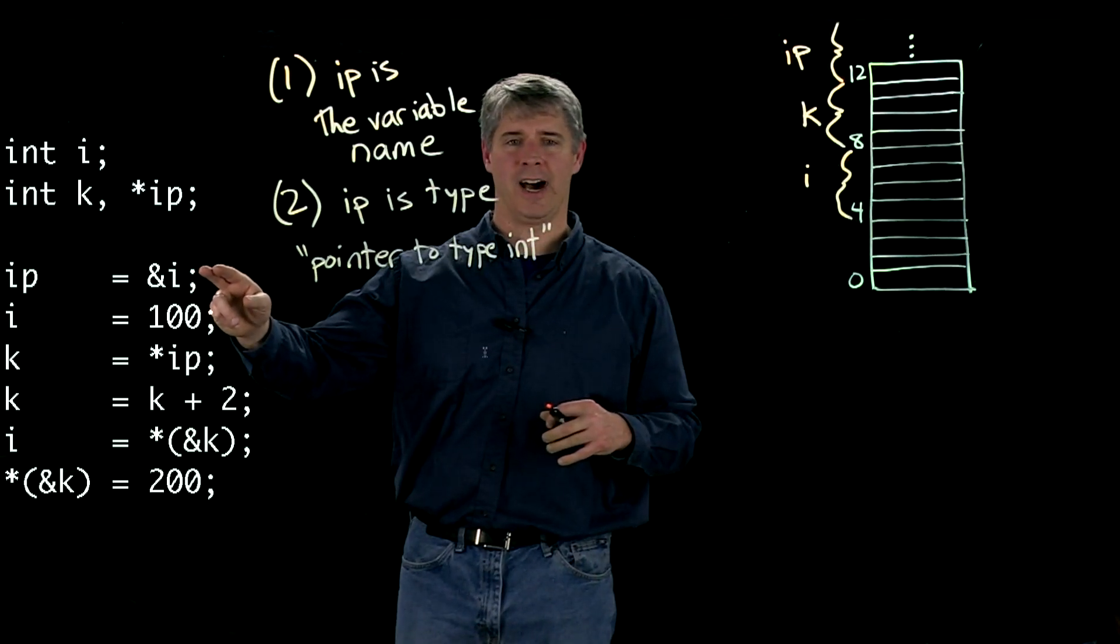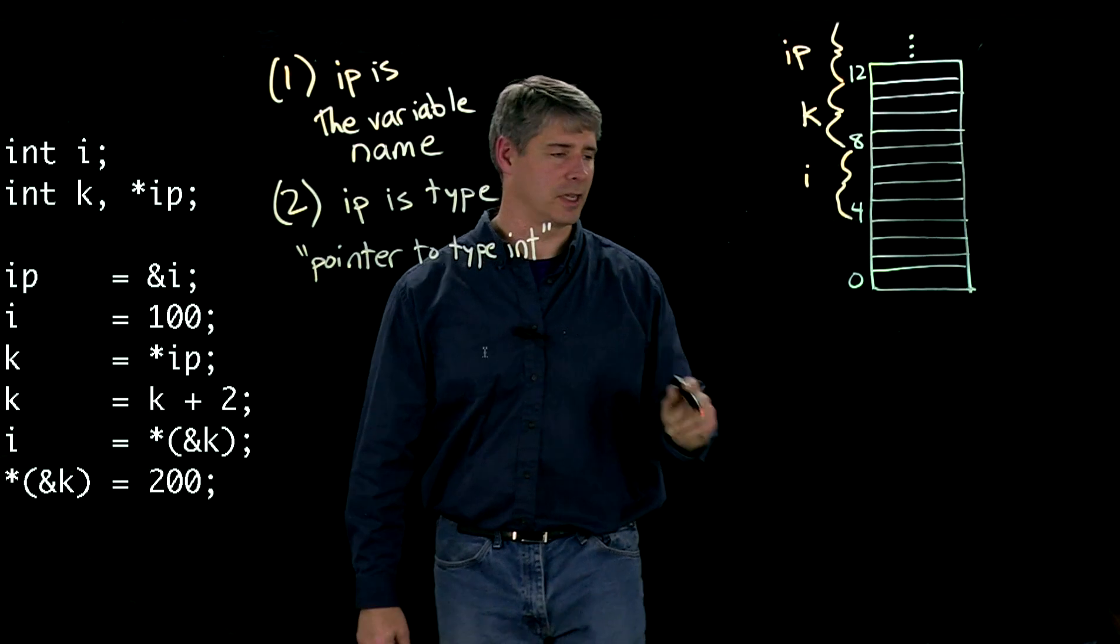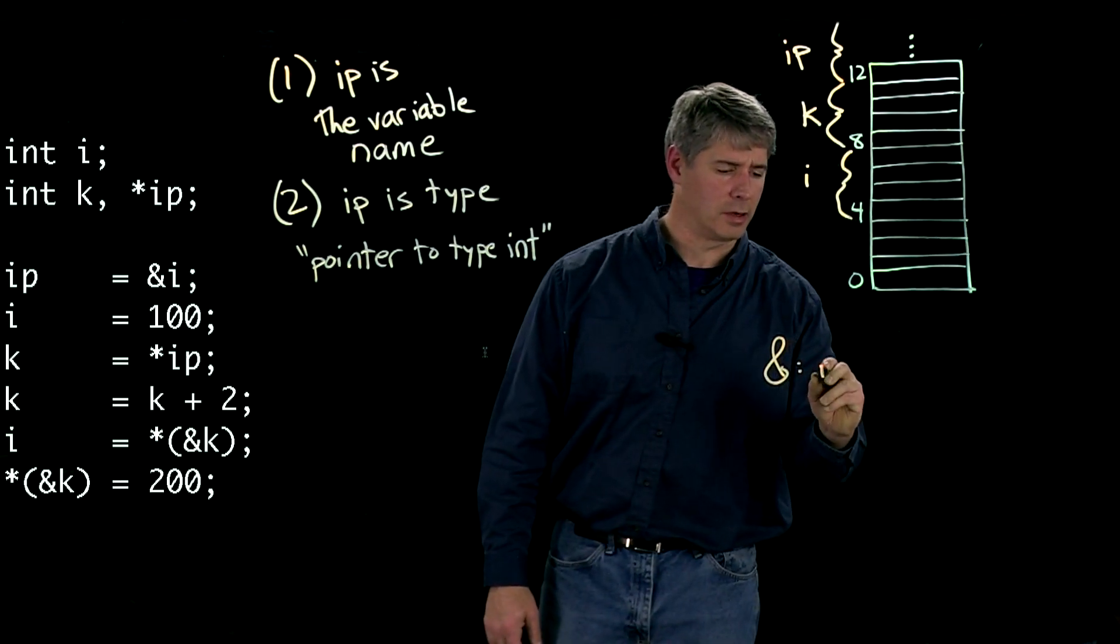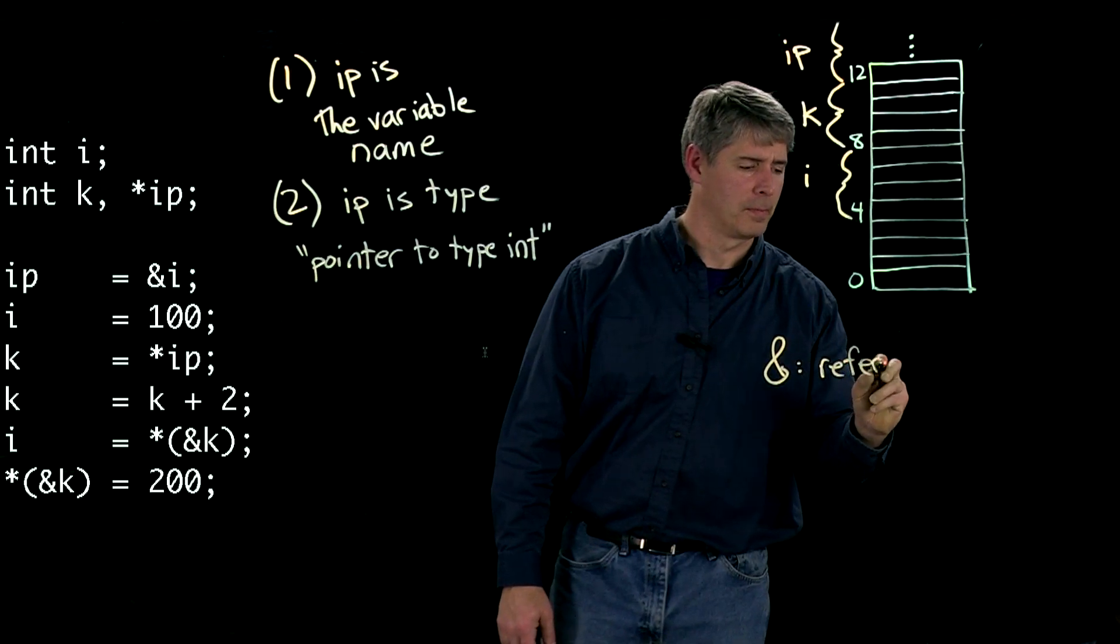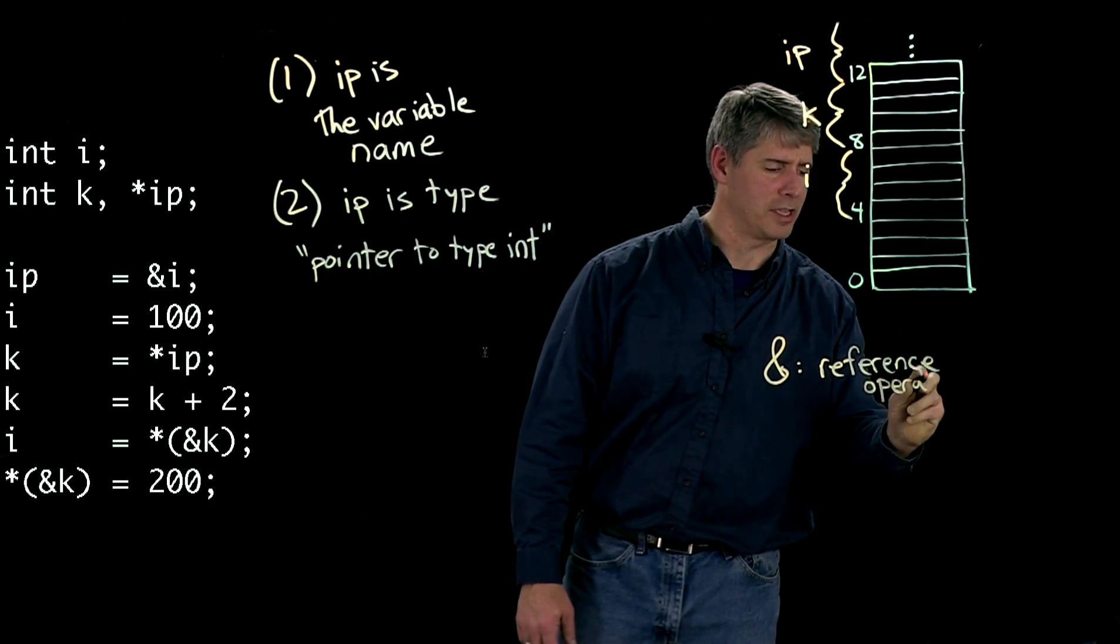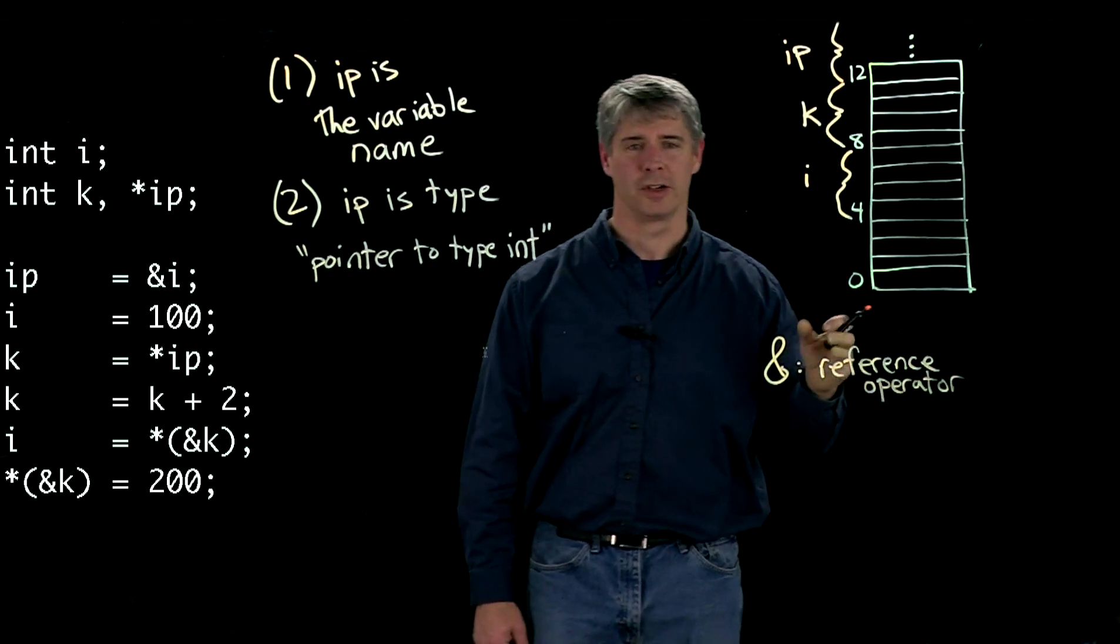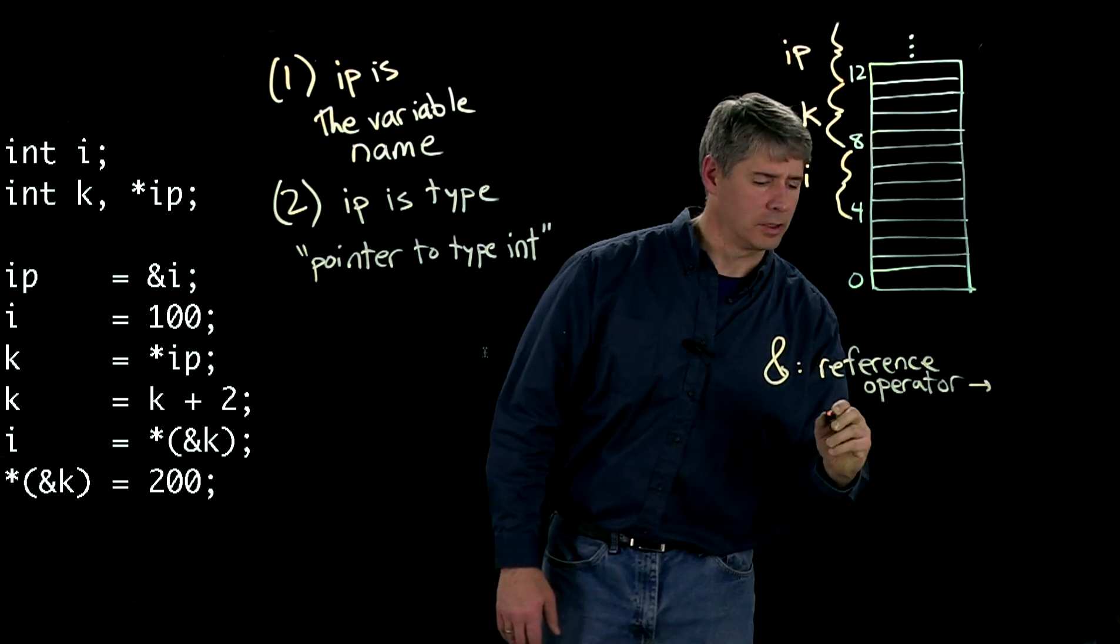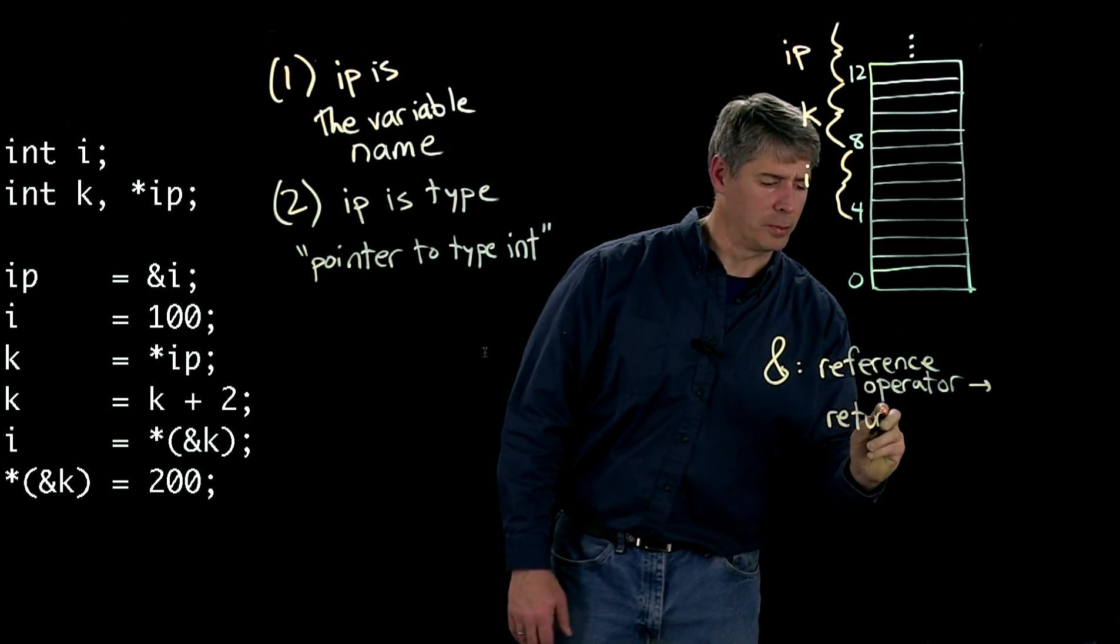ip is equal to ampersand i. Now ampersand is also a special character. And ampersand is called the reference operator. It's called that because it creates a reference or a pointer or an address of the thing that happens after it. So it returns a pointer.